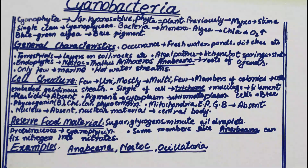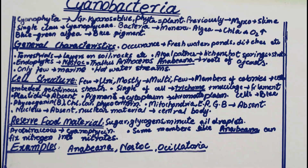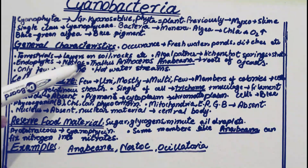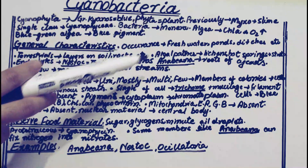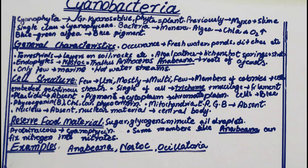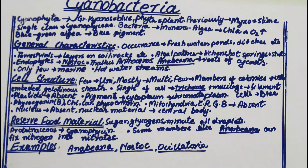They live in hot springs as mentioned. Many species of cyanobacteria are endophytes — a term for organisms that live inside the body of another plant. 'Endo' means inside and 'phyte' means plant. Examples include Nostoc, which lives in the thallus of Anthoceros (a bryophyte), and Anabaena, which lives in the roots of Cycas. Only a few species are marine; most live in freshwater.